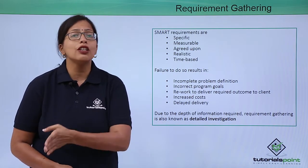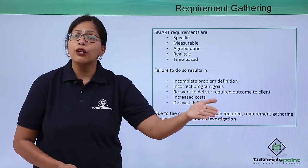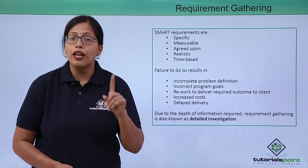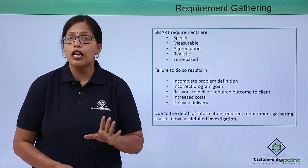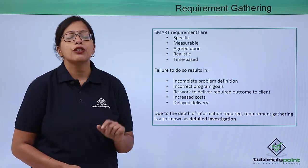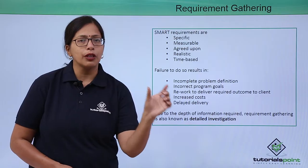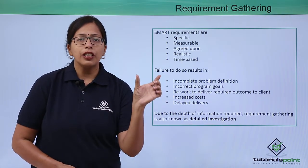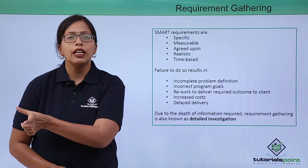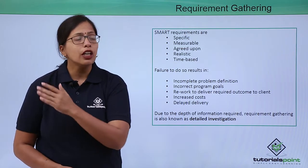Your client might have some problems whose solution does not lie in software — it could be a problem with their own process, and that is something you cannot solve. You should be very realistic about that and tell your client clearly. Requirements should also be time-based; you should always be able to define timelines — within one month you can do this, within two months this, and over six months deliver the complete solution.